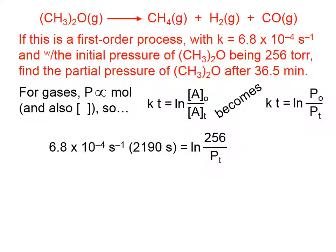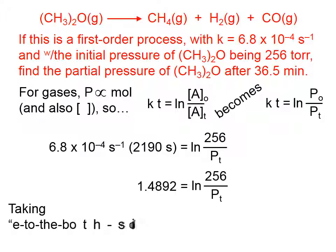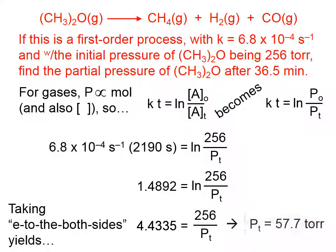Now we simply have to solve this for Pₜ. The left side is simply a number. How do we get rid of that natural log? You take e to both sides. e to the 1.4892 power gives you 4.4335. If you take e to the right side, the e and the natural log magically disappear and you end up with 256 over Pₜ, which you can then very easily solve for Pₜ to be 57.7 torr.